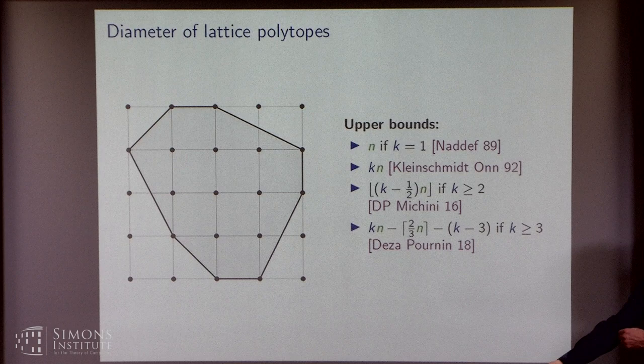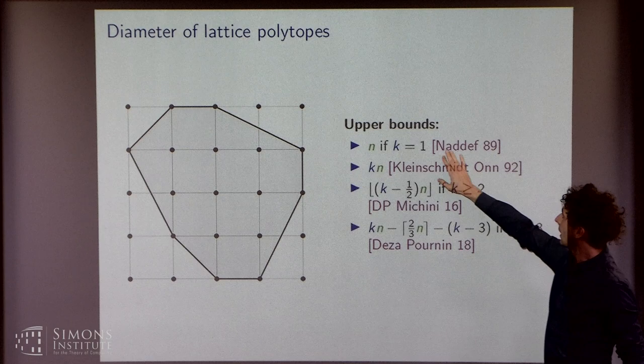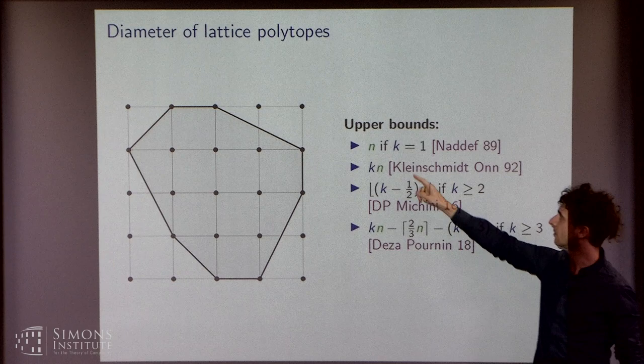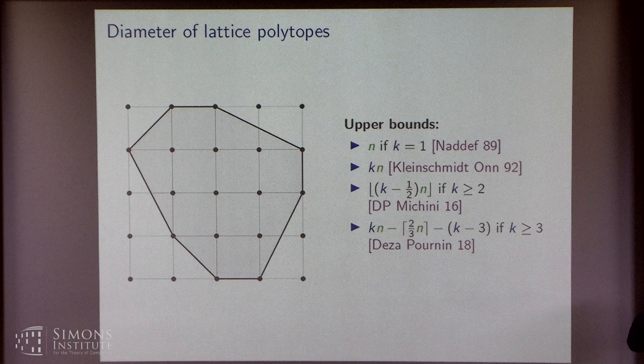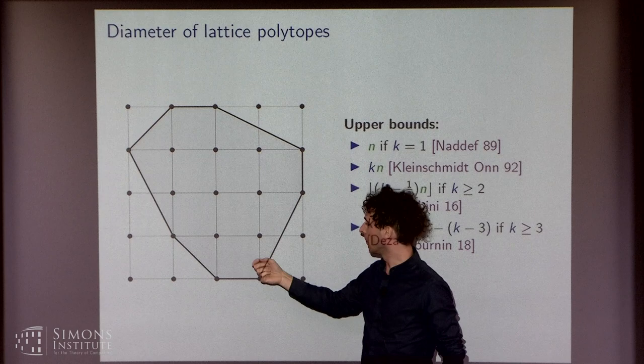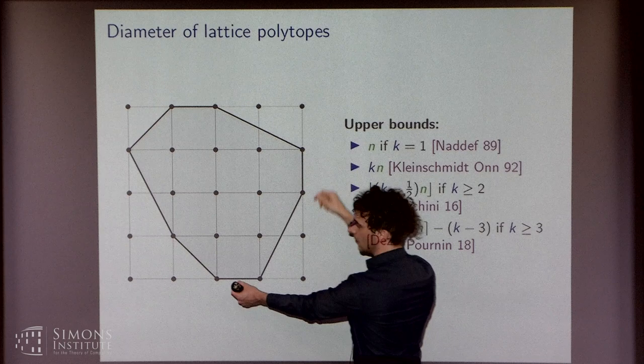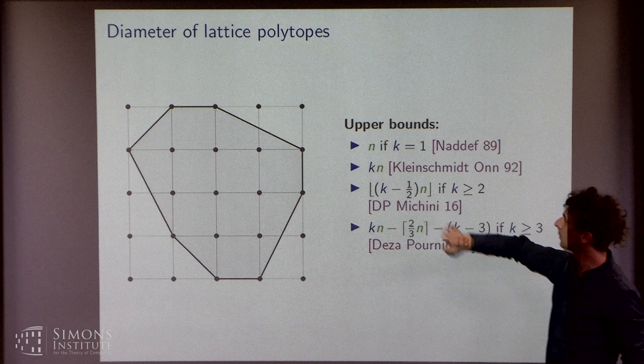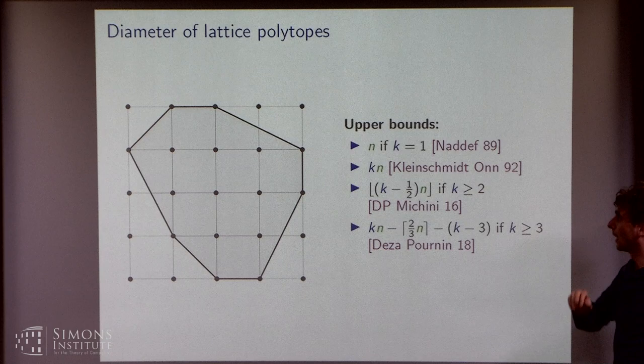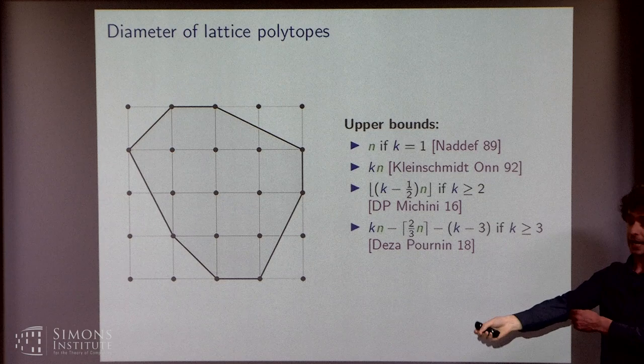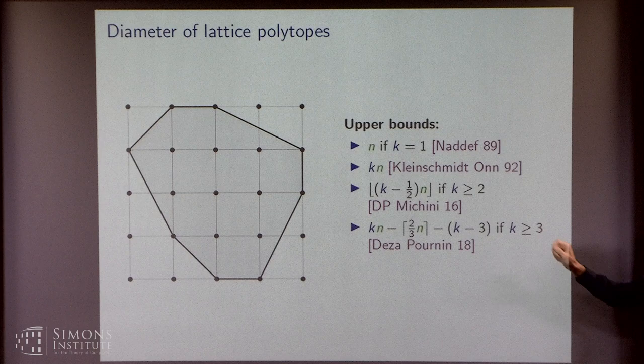So there's been a very interesting stream of research regarding the diameter of lattice polytopes. It started with Naddef in 1989, who gave an upper bound of n for the case k equal to 1. Maybe remind people what diameter you mean. Oh yeah, sorry. I'm talking about the combinatorial diameter, which is the longest path along the edges of the polytope between any two vertices.